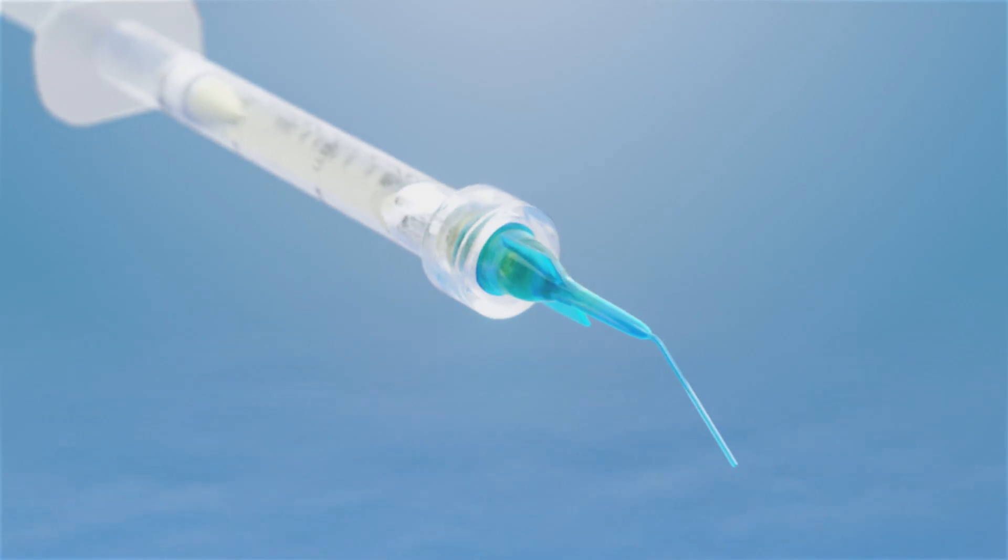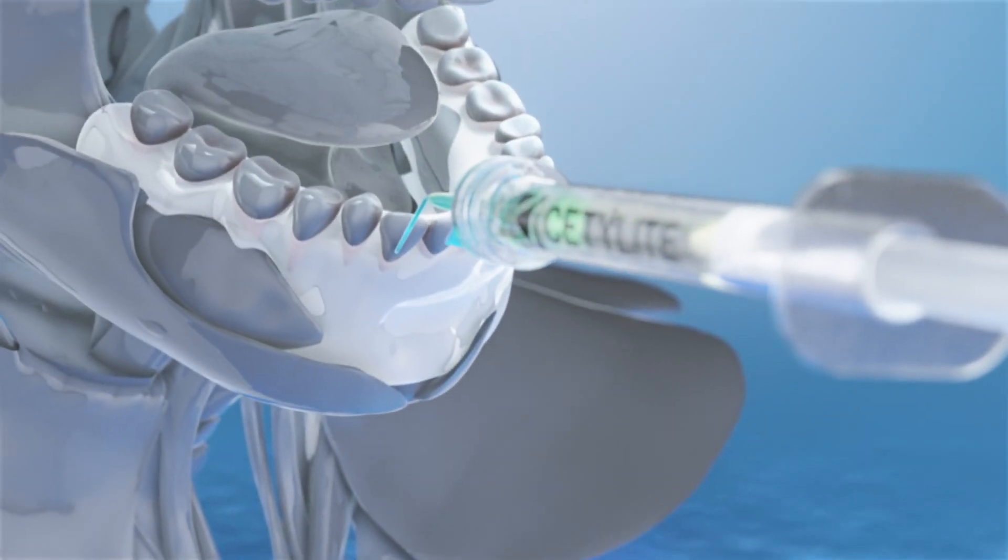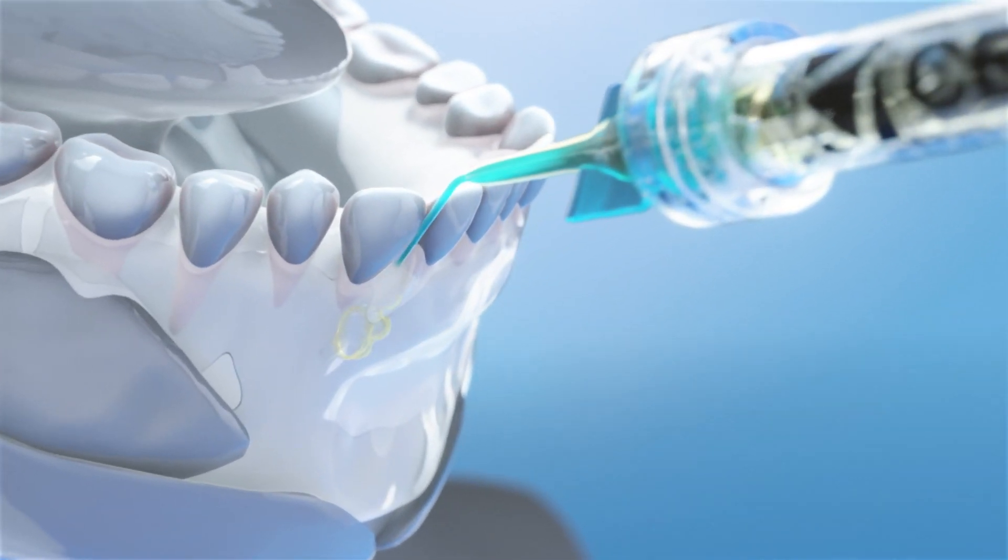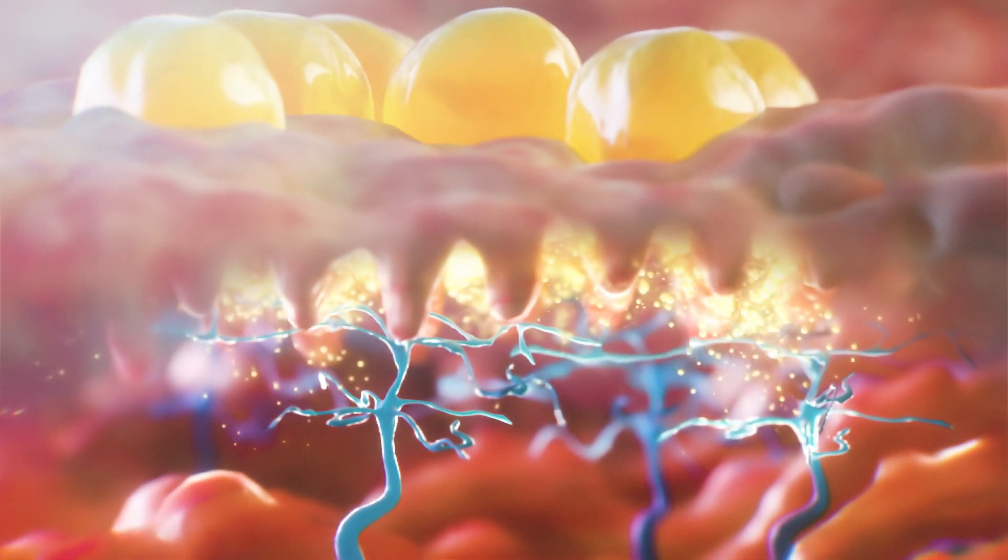Cetacane liquid is applied dropwise into the sulcus using its soft, micro-tipped dosing syringe. Each highly viscous drop flows effectively into periodontal pockets and persists there to penetrate and anesthetize the mucosa.